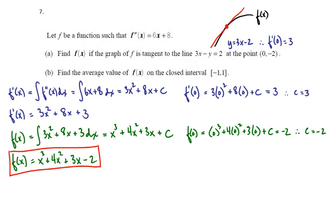In part B we want to find the average value of f(x) on the closed interval from -1 to 1. That average value is given by f(c), and the general formula is 1 over b minus a times the integral from a to b of f(x) dx.